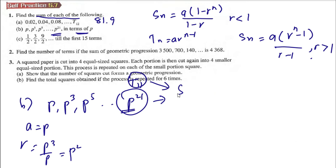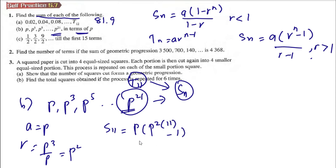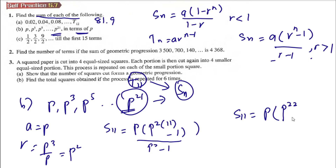Since P²¹ is T11, we want to find S11. S11 = A(Rⁿ - 1) / (R - 1), where A = P, R = P², and N = 11. This gives S11 = P(P²² - 1) / (P² - 1).